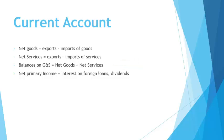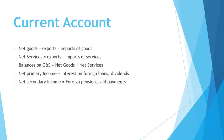Another very important section is what we call net primary income. The big ticket items here are interest on foreign loans and dividends and other one-way transactions paid to and from Australia. The interest on foreign loans is by far the biggest impact item. And that's why, generally, the current account as a whole is always negative. Net secondary income covers things like foreign pensions and aid payments — again, one-way or non-reversible transactions.